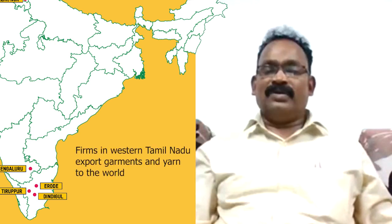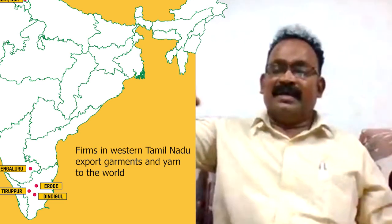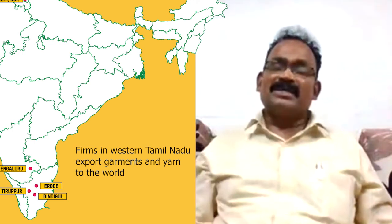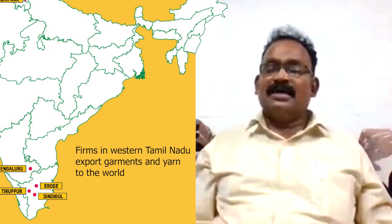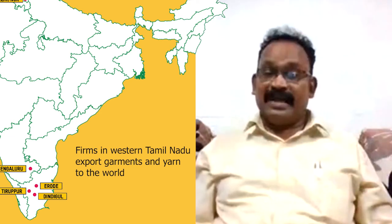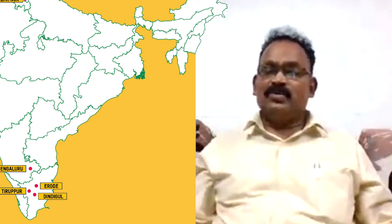Tamil Nadu's textile hub is particularly in the western region: Erode, Tirupur, Coimbatore, Namakal, Dindigul, Karur, and Salem — a seven-district textile hub. Though some garment factories exist in Chennai, the major production is historically in western Tamil Nadu. Sixty percent of production from this region is exported to Europe, the US, the UK, and other countries, including both garment items and yarn from spinning.